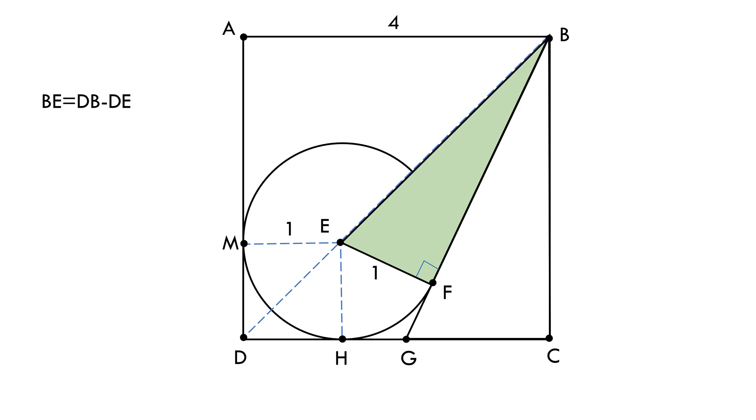DB will be equal to root 4 square plus 4 square equals to 4 root 2 units being the diagonal of the bigger square ABCD. DE will be equal to root 1 square plus 1 square equals to root 2 being the diagonal of the small square MEHD. So BE will be 4 root 2 minus root 2 equals to 3 root 2 units.